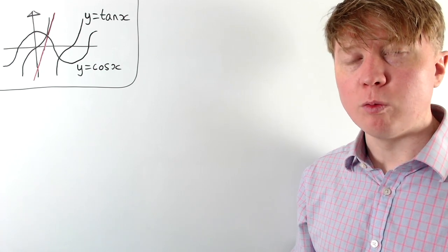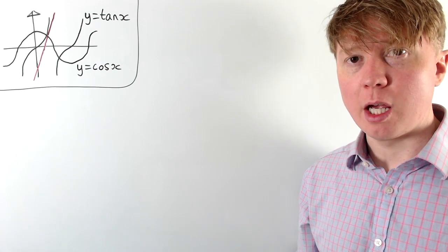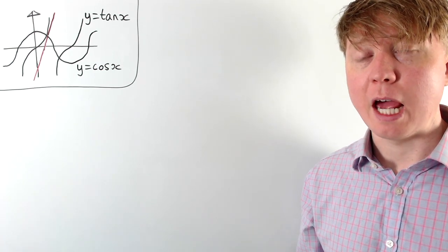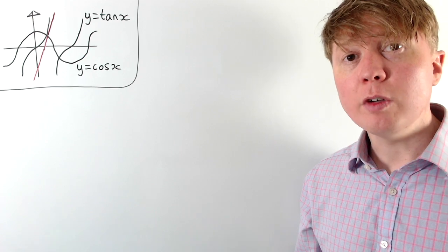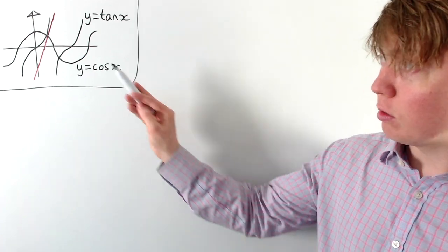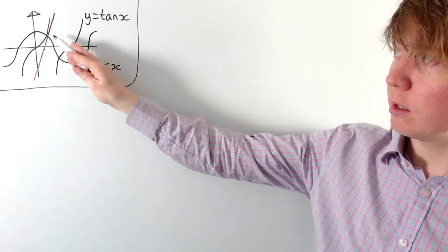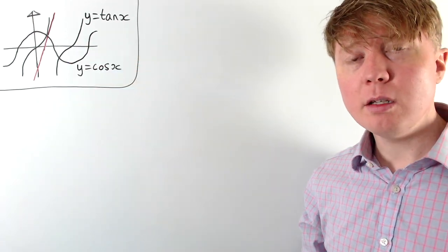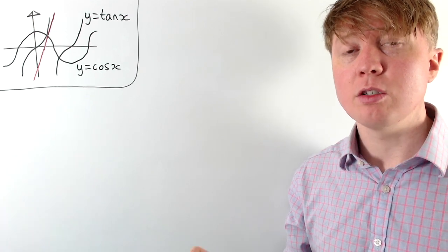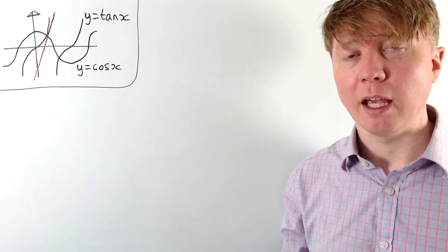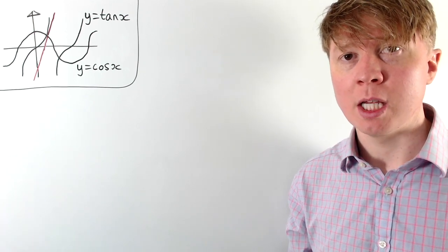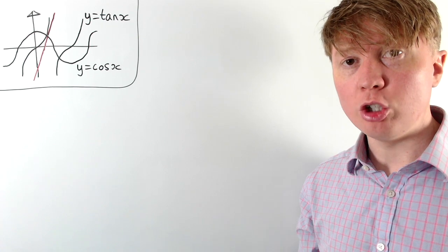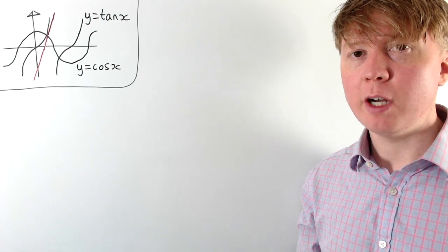If you have a graph of y equals cos x and a graph of y equals tan x, and you find a point where the two functions intersect each other, it turns out that the gradient of the tangent to y equals tan x at that point of intersection is going to be the golden ratio, phi.